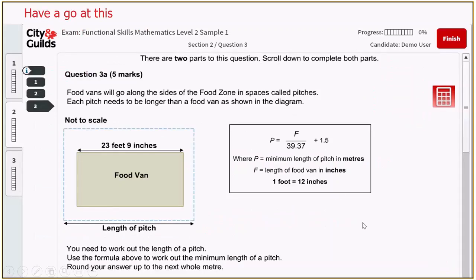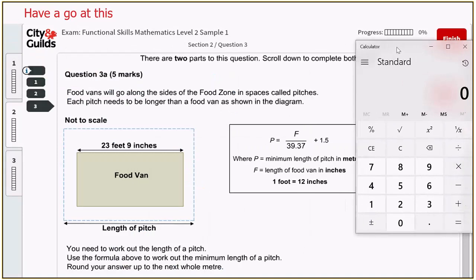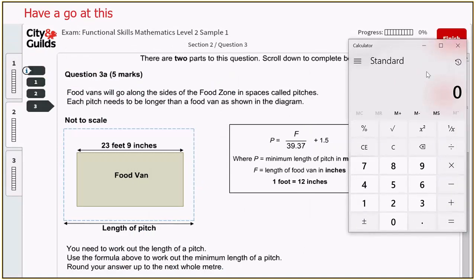Let's have a look at this one. This is a real-life example question that you could get in Functional Skills, and it's about a food van. Really, all we're worried about is the numbers and the formula. Here P is the minimum length of pitch in meters - that's what we're working out, so we don't know that. F tells us the length of the food van in inches. What's the first thing we need to do? What's going to be the key here to working out the letter F? Not a clue.